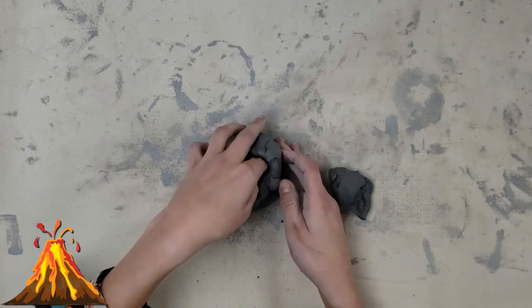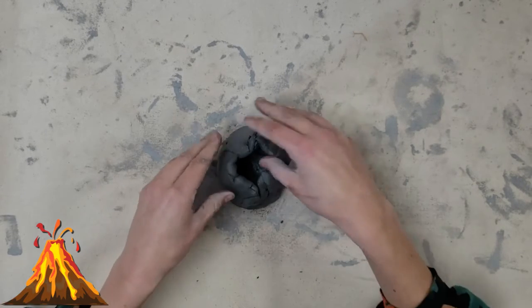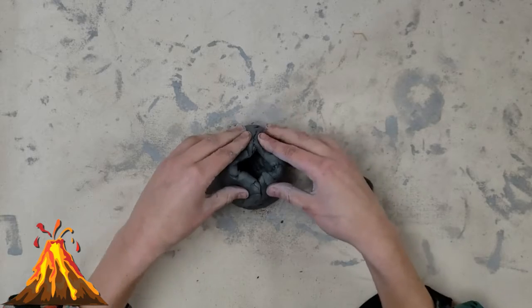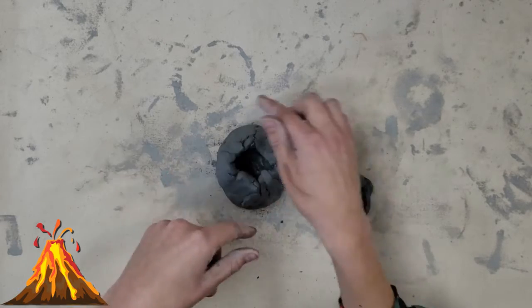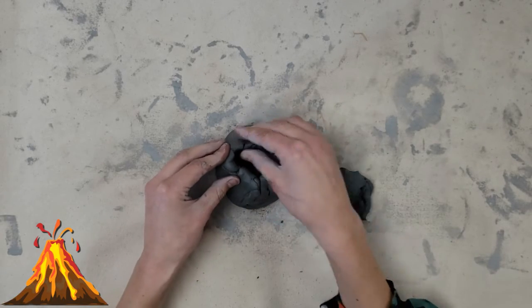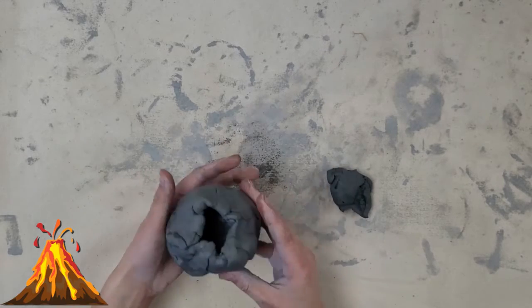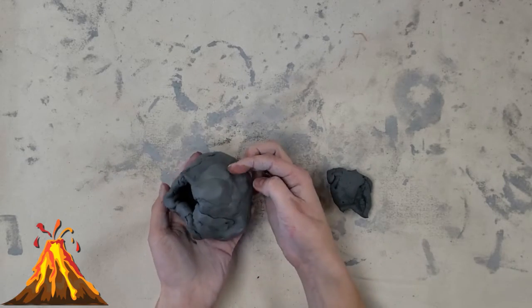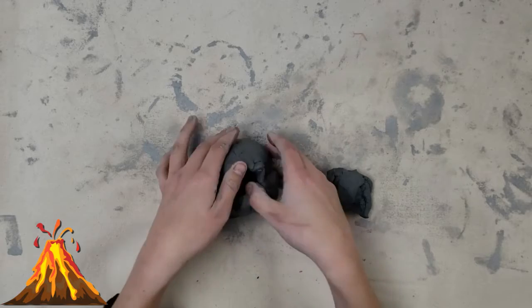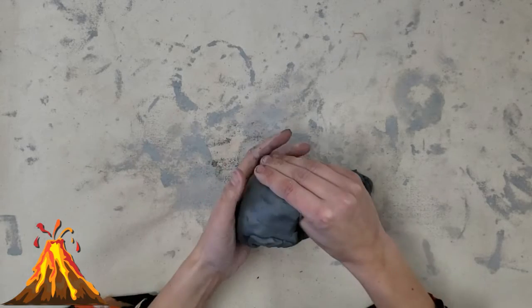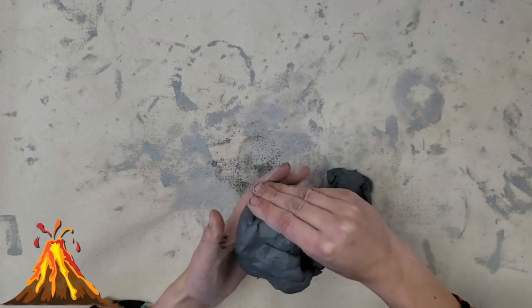Here, there we go. And I'm going to just reshape the top of my volcano because they're not perfectly round, right? They have some edges that are longer, taller. There we go. And here you can see my volcano's coming down the side.